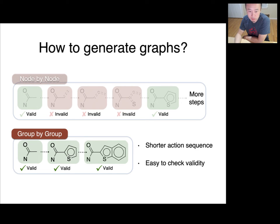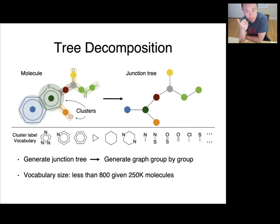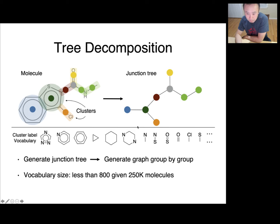The validity metric becomes trivial with this approach — you get 100% valid structures all the time. The other key idea is tree decomposition: instead of manipulating a graph directly, they look at the backbone of the graph, which is a tree, or what they call a junction tree. This is essentially a spanning tree over the functional groups, where every node corresponds to a functional group. From a large molecule database of over 250,000 molecules, there are fewer than 800 distinct functional groups — very manageable.